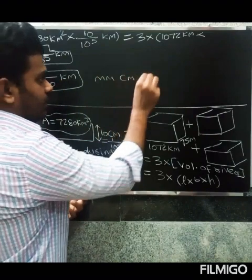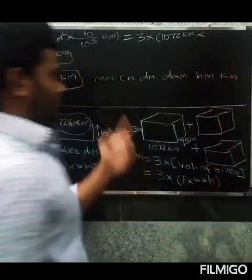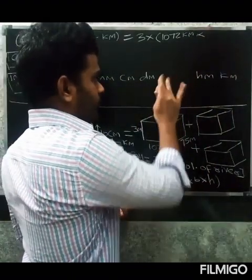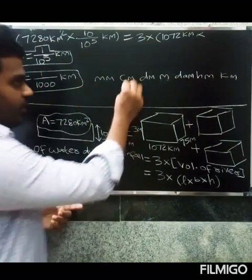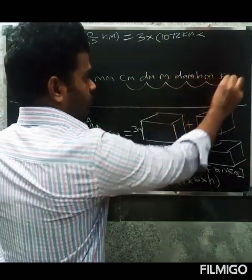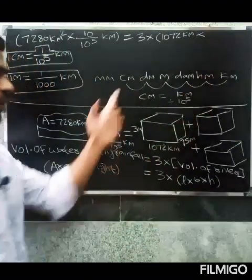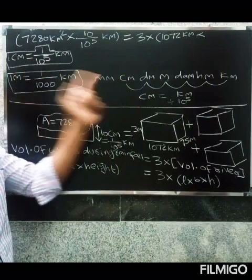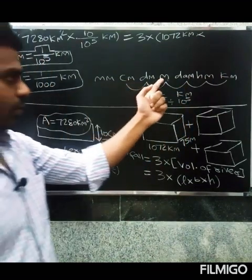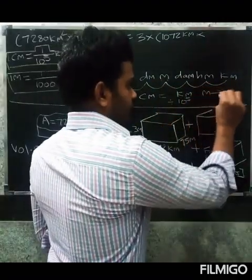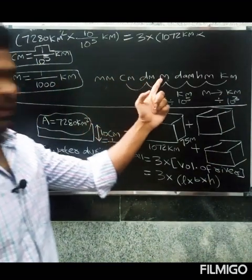The conversion chain is: millimeter, centimeter, decimeter, meter, decameter, hectometer, kilometer. From centimeter to kilometer: divide by 10 power 5 — that is 5 steps to the right means divide. From meter to kilometer: 3 steps, so divide by 10 power 3, which is 1000. So 75 meters equals 75 divided by 1000 kilometers, and 3 meters equals 3 divided by 1000 kilometers.